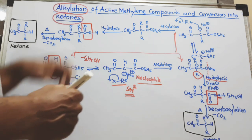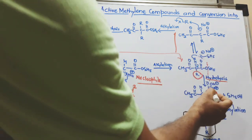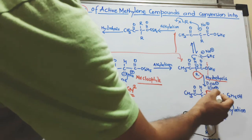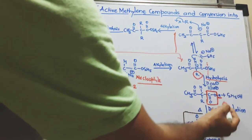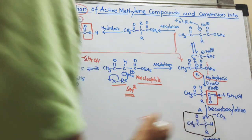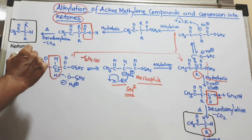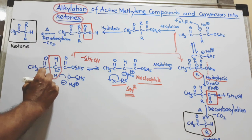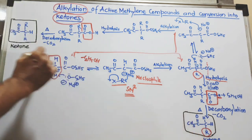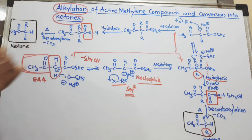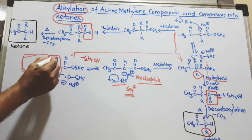This step is called decarboxylation — removal of CO₂ — where you heat this product at high temperature to remove carbon dioxide. I have shown that carbon dioxide using a red square. You simply join the remaining fragments outside that square: the hydrogen and the carbon, giving you the ketone. This compound is ethyl acetoacetate, and whatever ketone you synthesize will have the acetyl group as a common factor. You can introduce an alkyl group at the place of hydrogen.